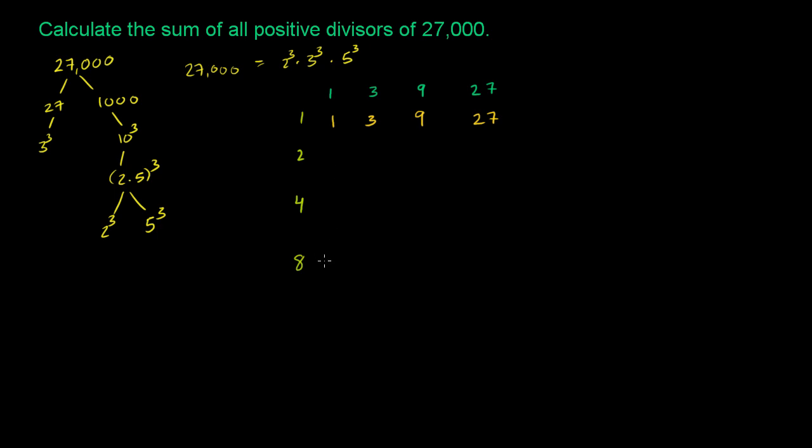Now before I do this, because I want to do this as fast as possible, I could figure out what these numbers are, but instead, let's just take the sum. Let's just take the sum of this first row. We have 1 plus 3 plus 9 plus 27. 3 plus 27 is 30, 1 plus 9 is 10, so this is going to be 40.